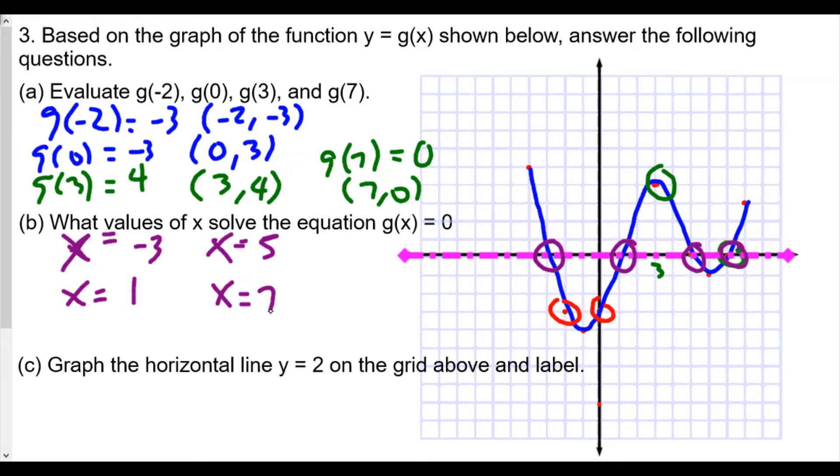So the coordinates would be in this case, negative 3, 0. Not here. Instead, here, 1, 0, 5, 0, and then 7, 0.